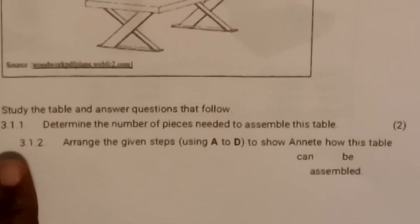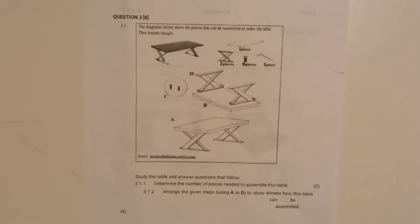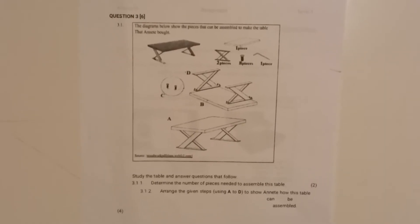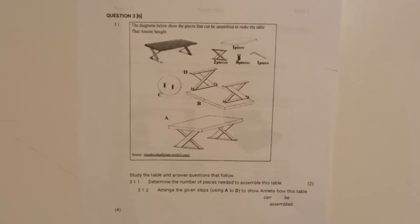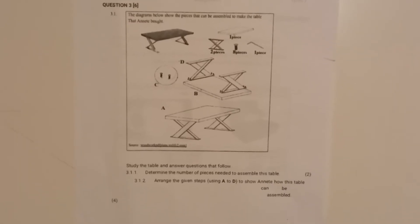Our first question, 3.1.1, says determine the number of pieces needed to assemble this table. Why is that important? When you open the box you need to count the pieces first. Don't start assembling and then along the way find a piece missing. So you need to know how many pieces are there.